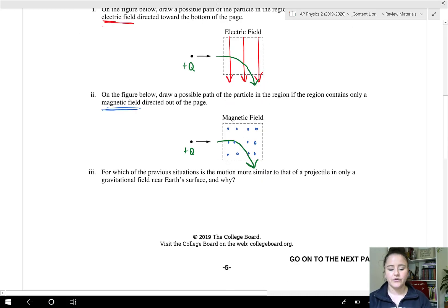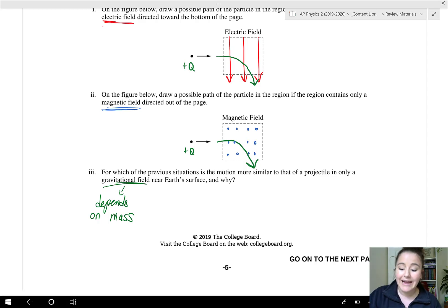Now this one says, for which of the previous situations is the motion more similar to that of a projectile in only a gravitational field near Earth's surface and why? We know that the gravity force depends on mass of the particle, but it doesn't have anything to do with the velocity of the particle. The magnetic field has to do with the velocity.